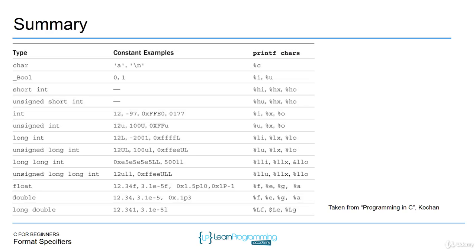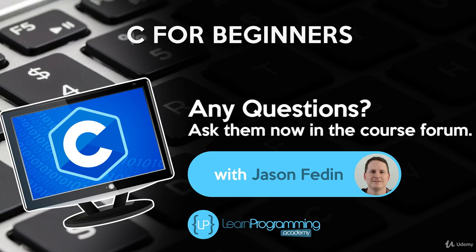Let's go back to the slides and summarize these format specifiers available in C. This summary slide shows the format specifiers you would use for printf. If you want to print out a character, use %c. For a bool, use %i or %u — that will print 0 or 1. Short int would be %hi or %hx. The ones you'll use a lot: int uses %i or %d; %f is associated with floats; doubles use %f, %e, or %g, each determining the precision. Long double uses %lf. Another popular one is %s for strings — just a sequence of characters. All these format specifiers can be used to convert data as well as display data as output.